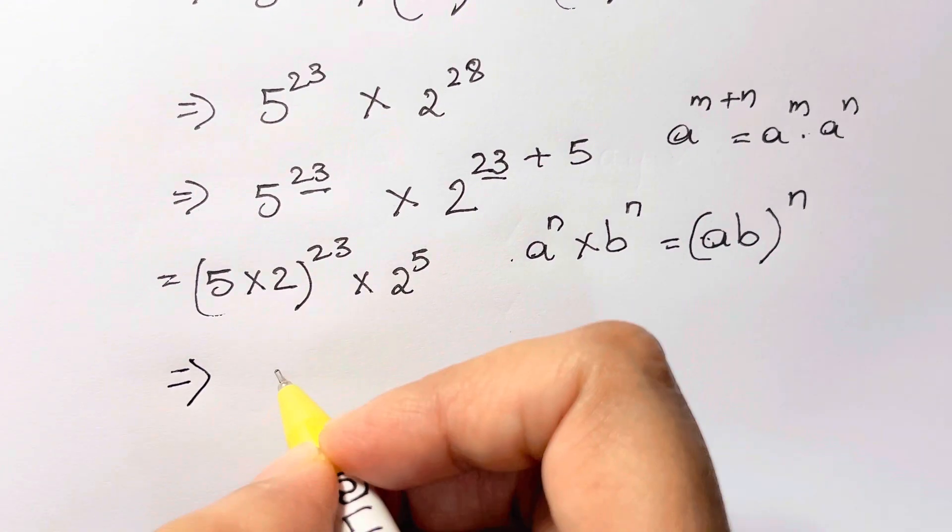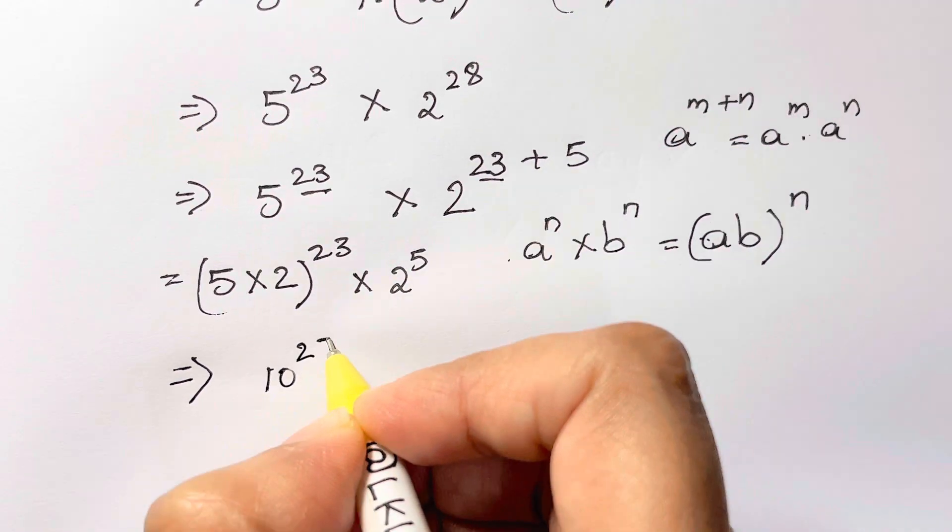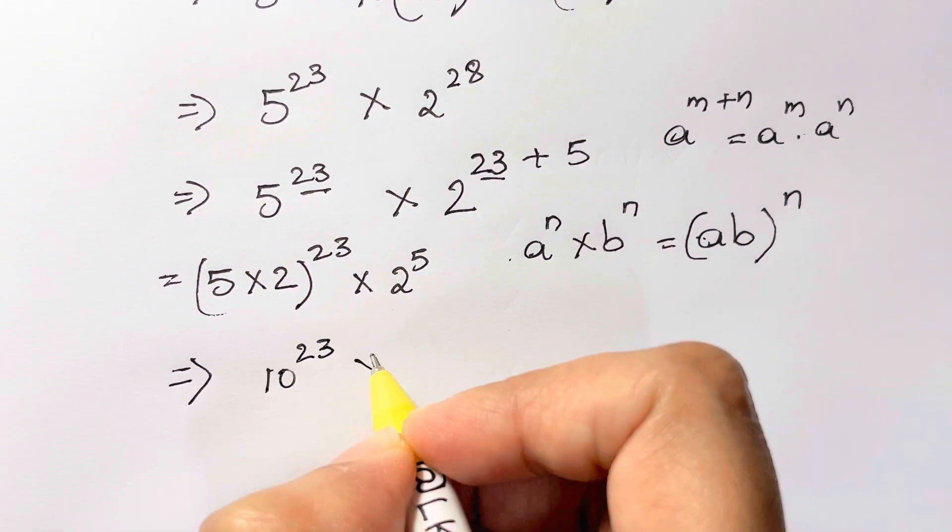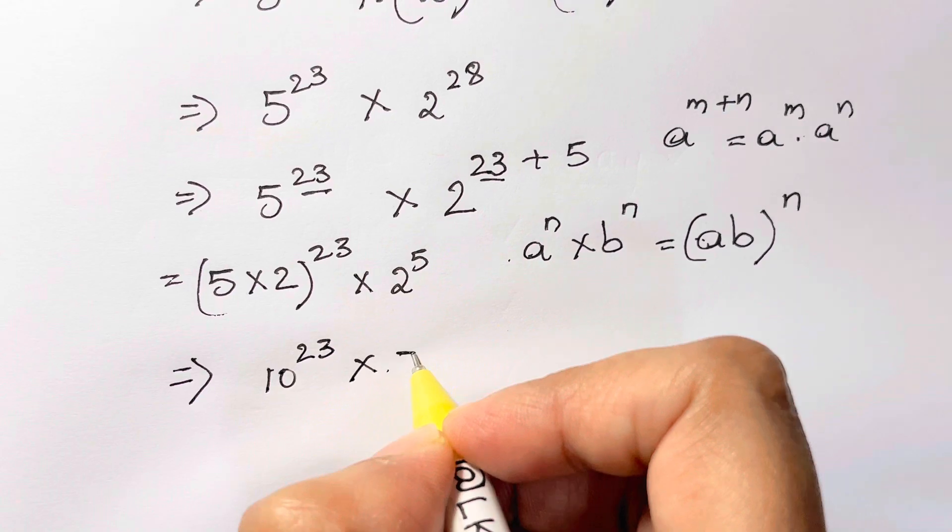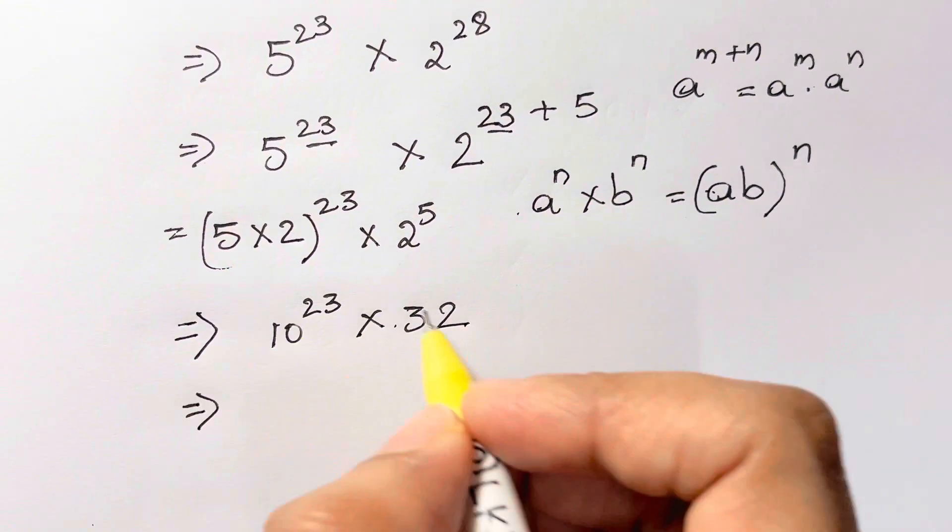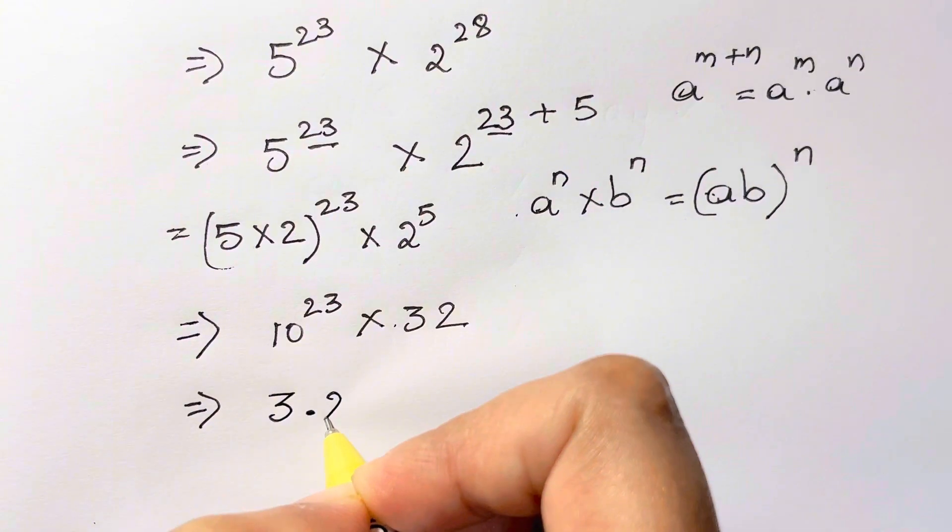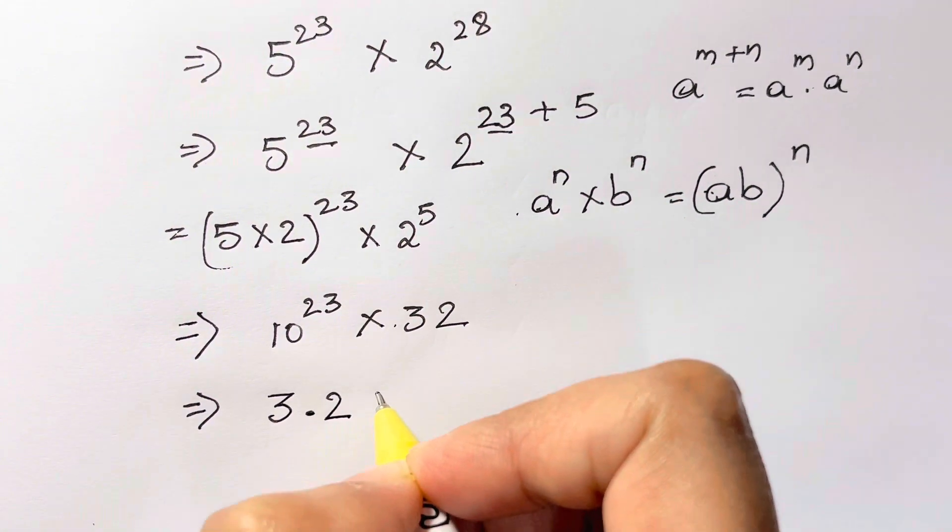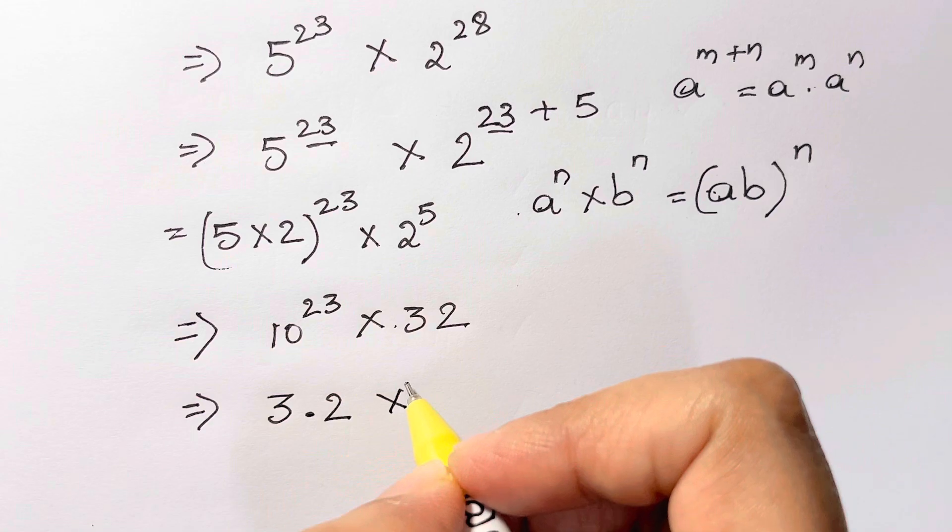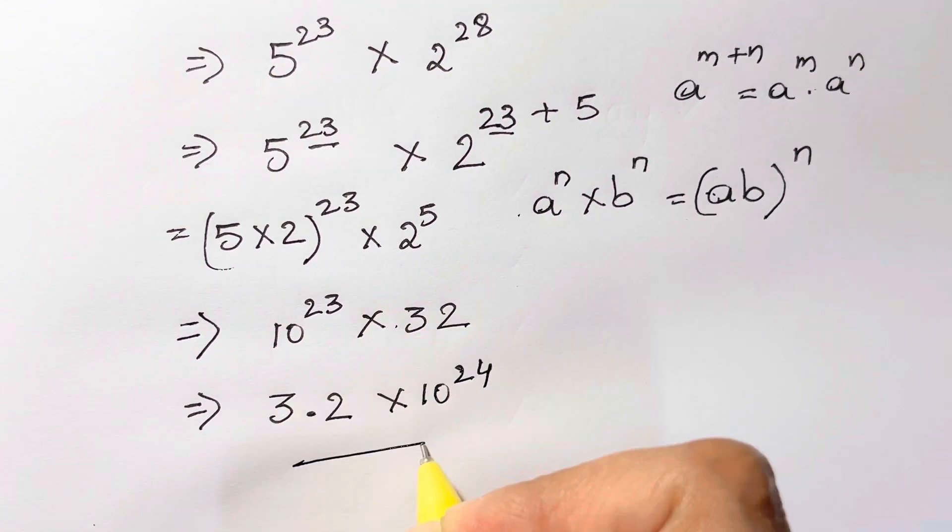5 times 2 is 10 to the power of 23, and then we have 2 to the power of 5, which equals 32. Let's write it as 3.2—whenever you take the decimal here, you add one zero: 10 to the power of 24. And that's your answer.